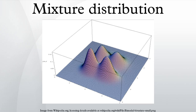In cases where each of the underlying random variables is continuous, the outcome variable will also be continuous and its probability density function is sometimes referred to as a mixture density.